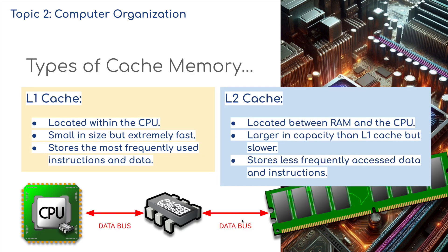There are two main types. Level 1 is located within the CPU — small in size but extremely fast — and it stores the most frequently used instructions and data. Level 2 is situated between RAM and the CPU; it's larger in capacity than level 1 cache but slower, and it stores less frequently accessed data and instructions.